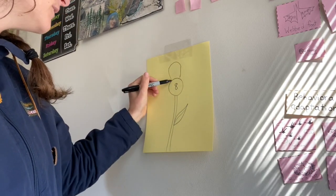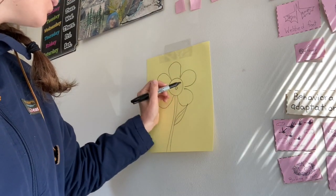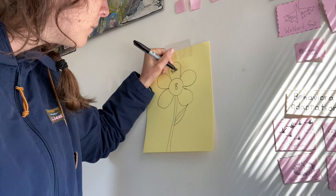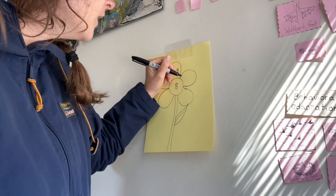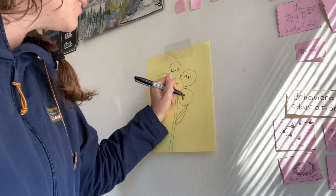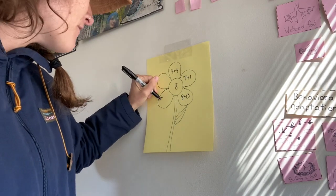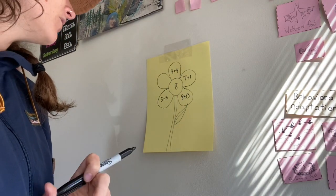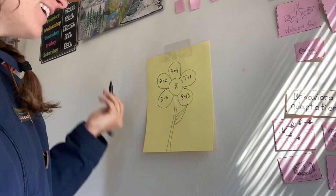We're gonna make our petals and then fill those petals with problems that equal eight. We could start with something like four plus four equals eight. We could do seven plus one equals eight. Eight plus zero equals eight. Five plus three equals eight. What else could we do? We could do six plus two equals eight.